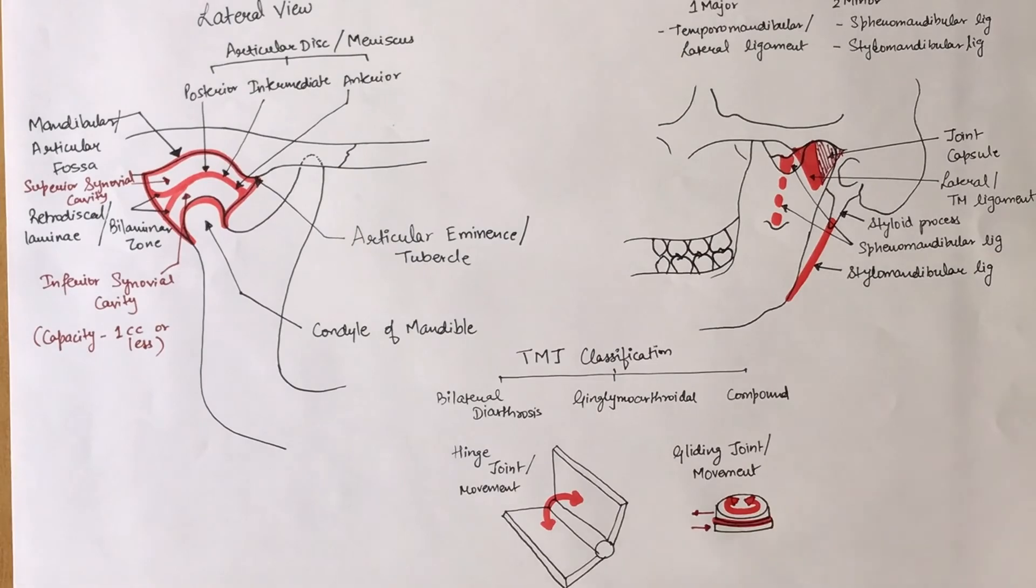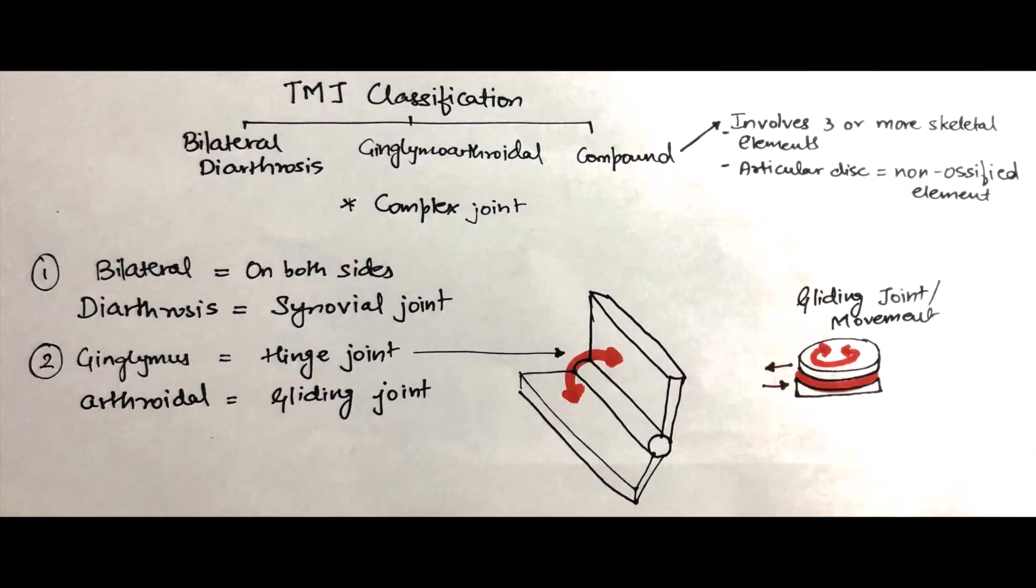Lastly, TMJ is a compound joint. A compound joint is formed when three or more skeletal elements come together. In case of TMJ, three elements are the mandibular fossa, condyle, and the articulating disc.